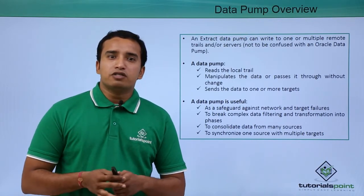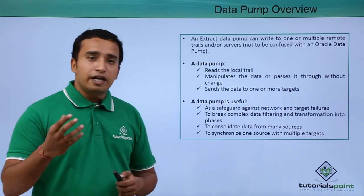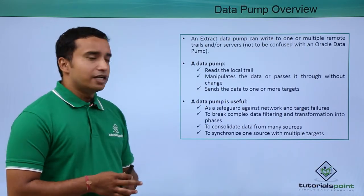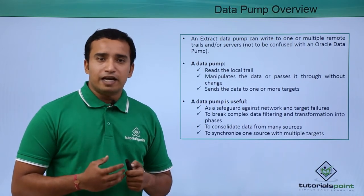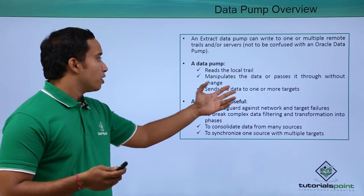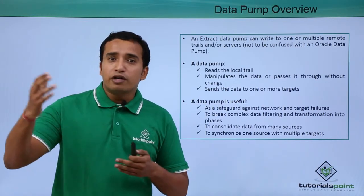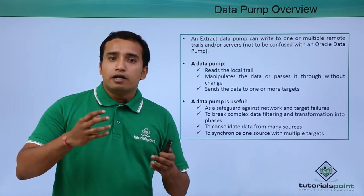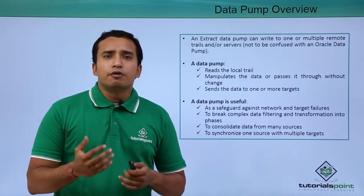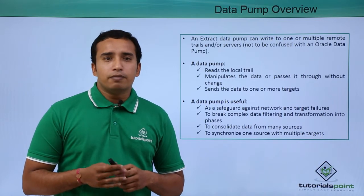This data pump process is specific to Oracle GoldenGate. A data pump process reads the local trail file that is created by the primary extract. It manipulates the data — if you want, you can manipulate the data before propagating it to the remote trail file, or you can also send the data to multiple systems, not only to one database. You can send the data from the local trail file to multiple databases by manipulating it. There are various manipulations that can be done using this data pump process.